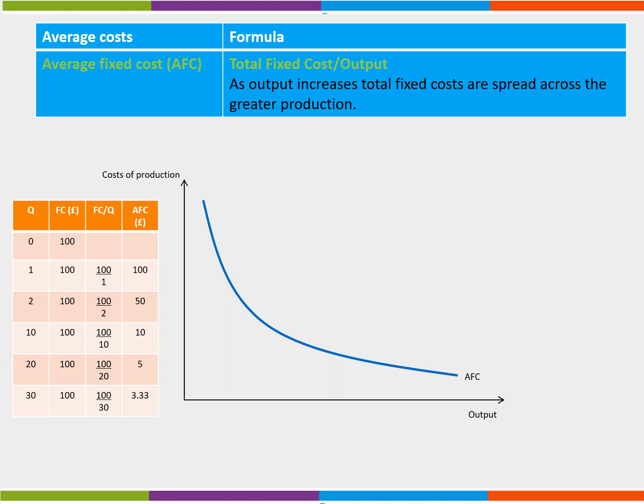If the output increases to two units, fixed cost is still 100 pounds but average fixed cost equals 100 pounds divided by two units therefore falls to 50 pounds. If the firm increases production to 10 units, average fixed costs would fall to 10 pounds. As we approach higher levels of output, average fixed costs becomes less and less important to the firm.